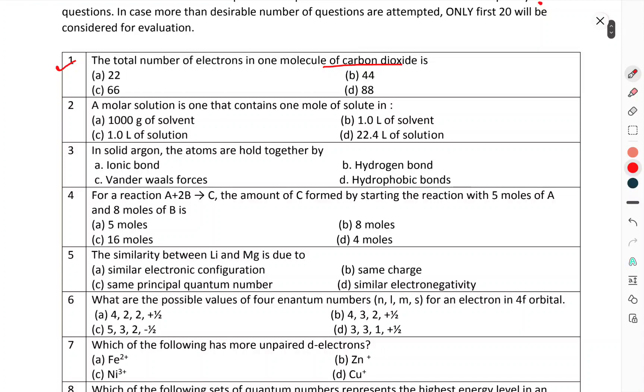Question number 1: The total number of electrons in one molecule of carbon dioxide is. Question number 2: A molar solution is one that contains one mole of solute in.